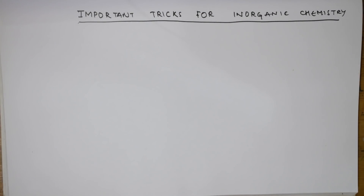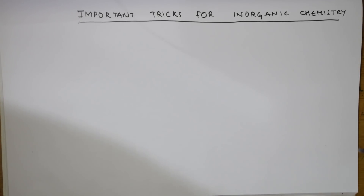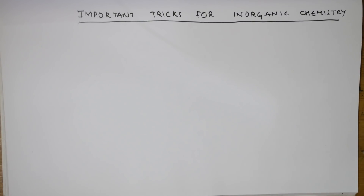Welcome back to the inorganic series. Many students have been asking about this, so before I start with the concepts, you need to remember some important tricks for inorganic chemistry. Mostly reasoning questions are given in inorganic chemistry — increasing order of acidity, decreasing order of basicity, covalent nature, magnetic moment, bond order, oxidizing power, reducing power. I'll be giving you 24 important tricks or concepts which you should remember so you can apply them to any question.